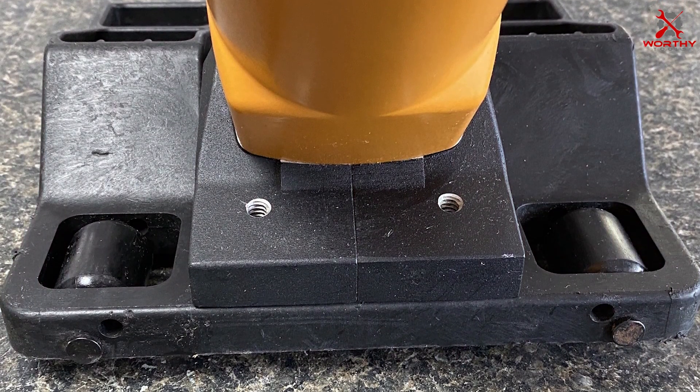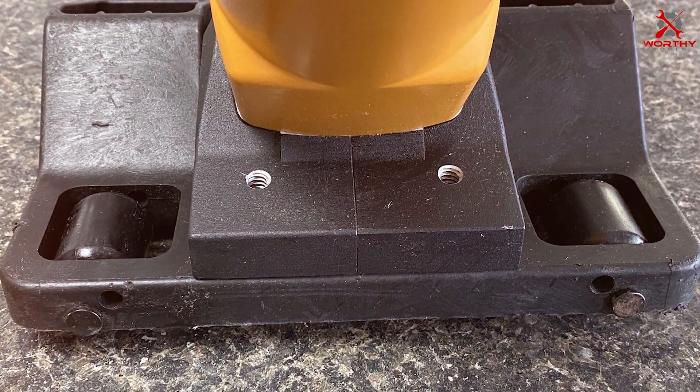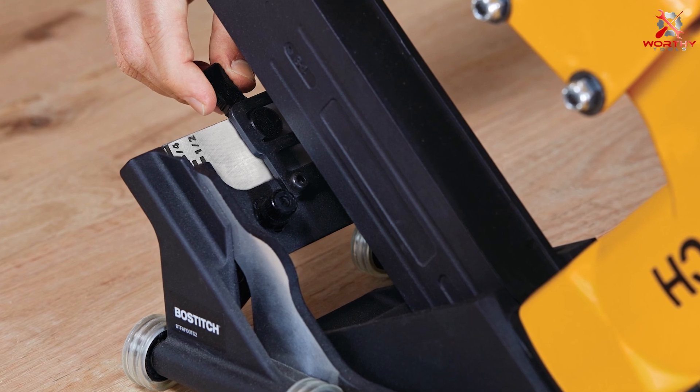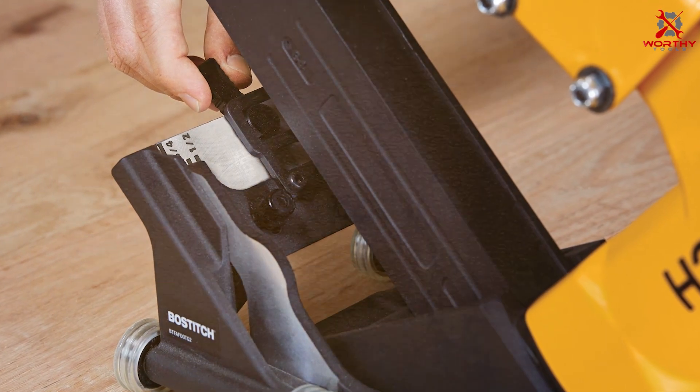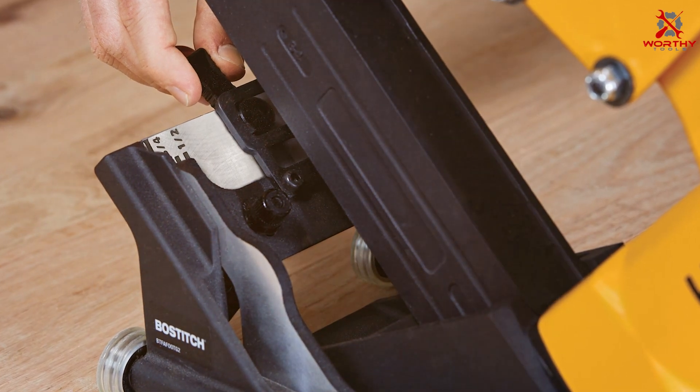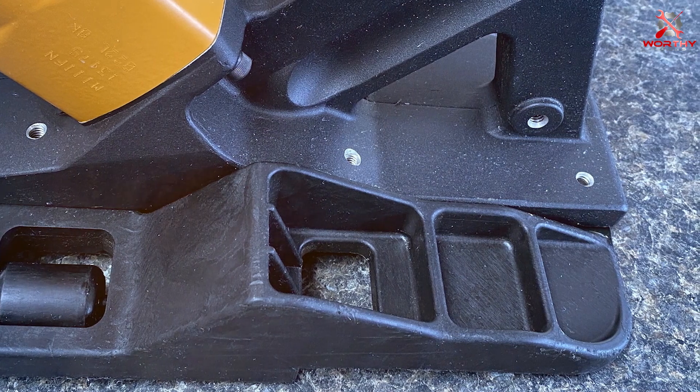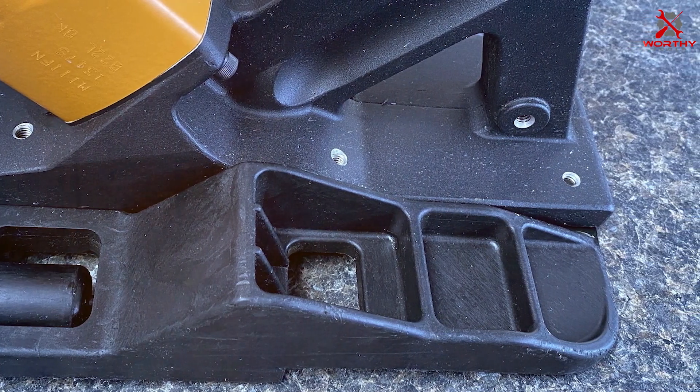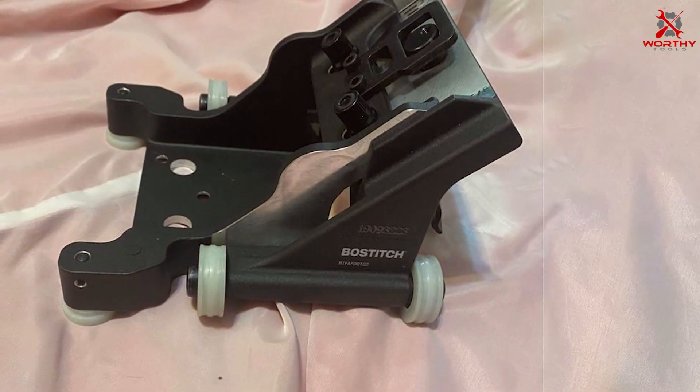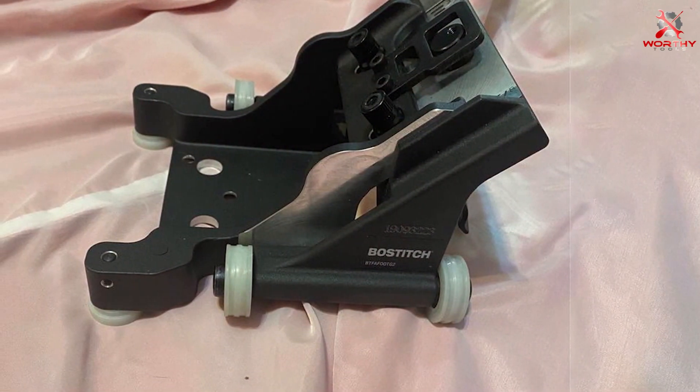The quality of the BTFAFOOTG2 is apparent in its sturdy build and the seamless integration with compatible nailers. It enhances the functionality of the nailer, allowing for quicker, more efficient flooring installation. Users have appreciated the ease of attachment and detachment, making it a convenient addition to their toolkit. Overall, the BOSTITCH BTFAFOOTG2 is a testament to the brand's innovation in making flooring installation more efficient and less strenuous.